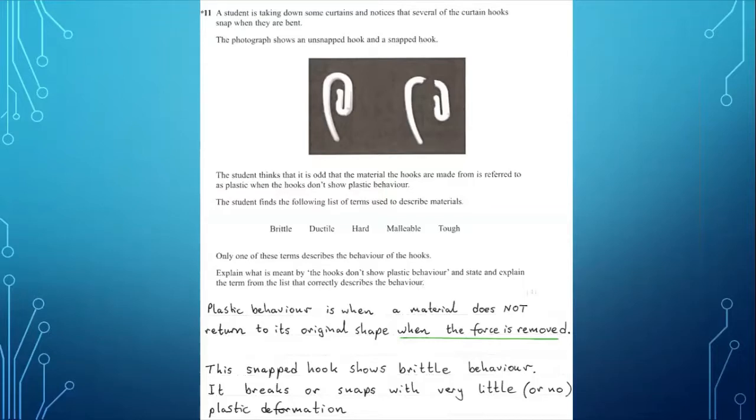Well, plastic behaviour is when the material does not return to its original shape once the load, once the force is removed. OK, but this snapped hook shows brittle behaviour. It breaks or snaps, cracks propagate through it with very little plastic deformation.